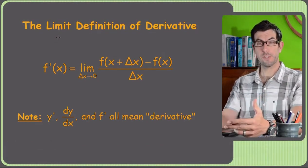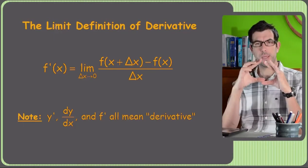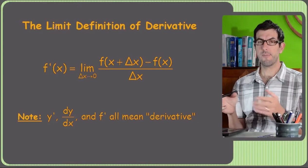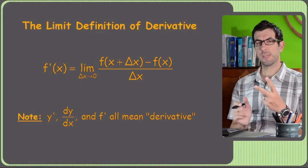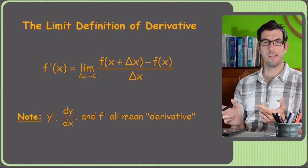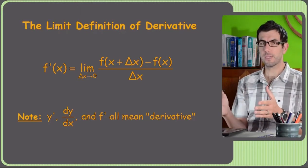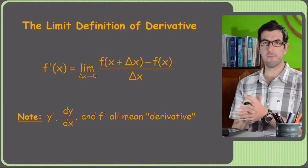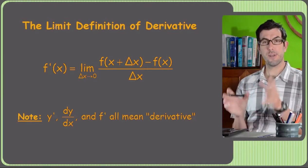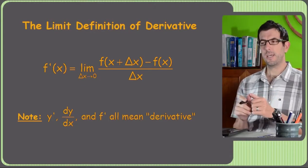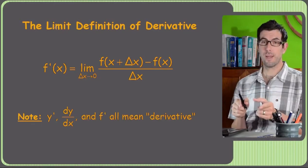Now if you're seeing this formula for the first time, it probably looks pretty scary. You've got these delta x triangle things, a limit in there — it's all pretty nasty, and you've also never heard of derivatives before when you first see this formula. But there are two good things about this formula. One is you're never going to see it again. There are way easier ways to find derivatives, so you'll learn about those in upcoming sections and pretty much forget this ever existed unless you take the AP test or come across it on the final.